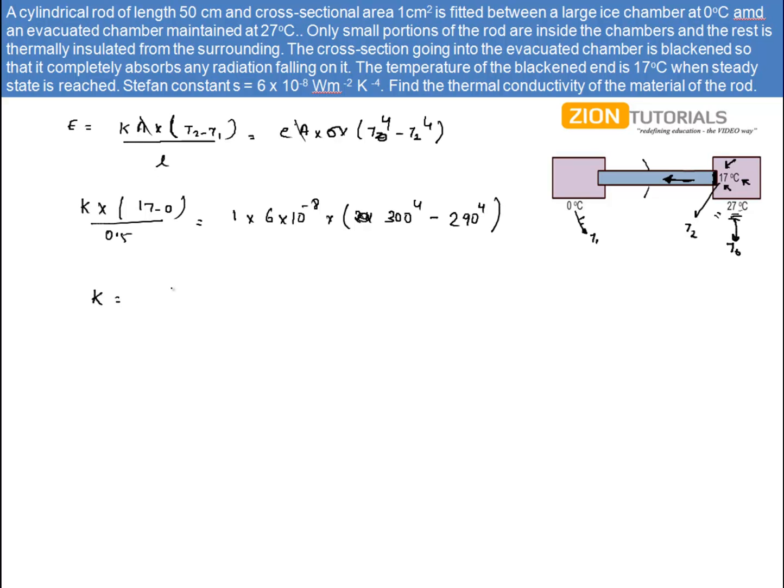Just solve this equation for the value of K. I get the value of K as 1.8 watts per meter per degree Celsius. That is my answer.